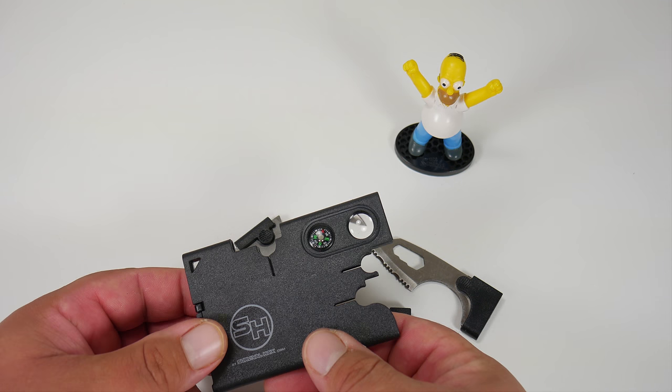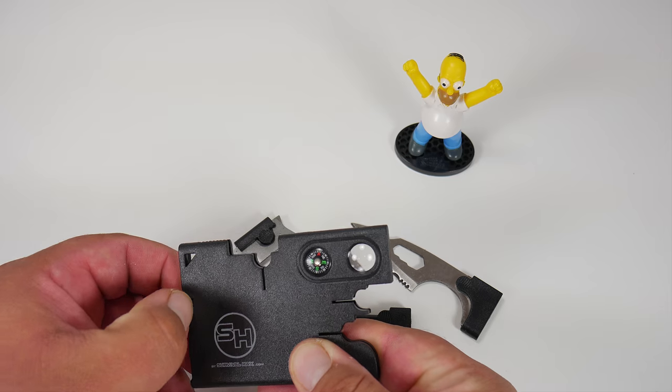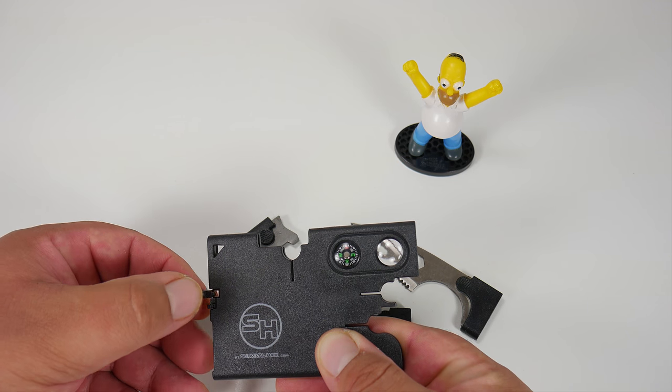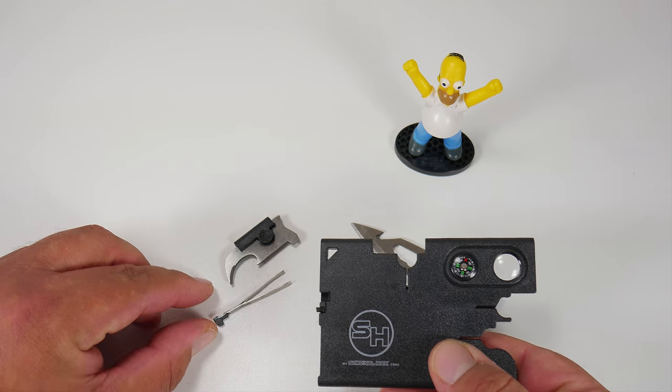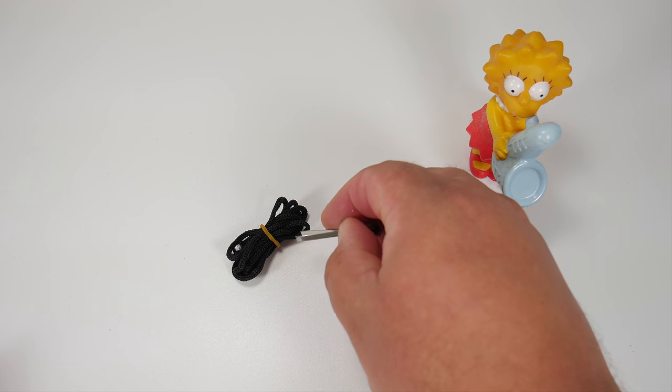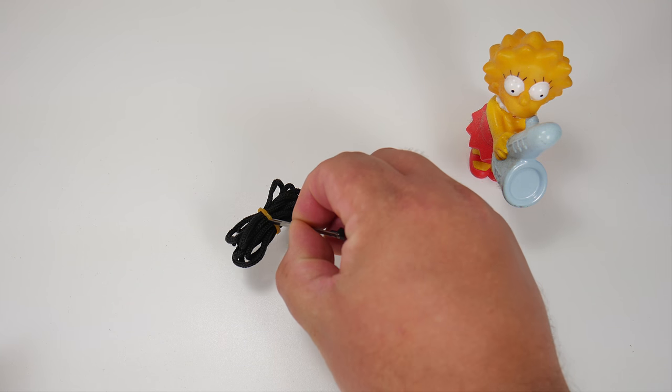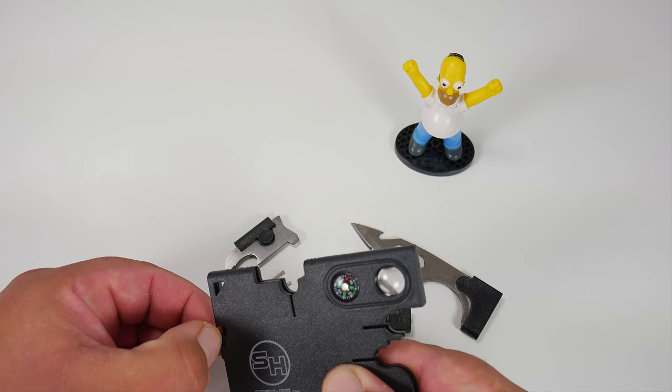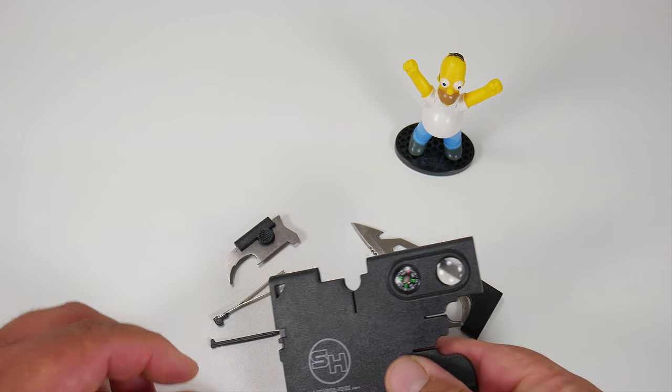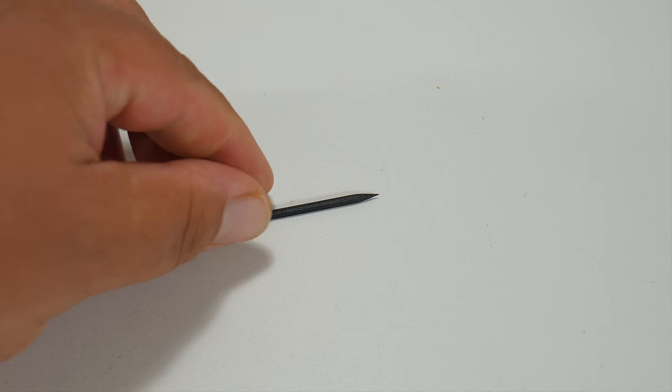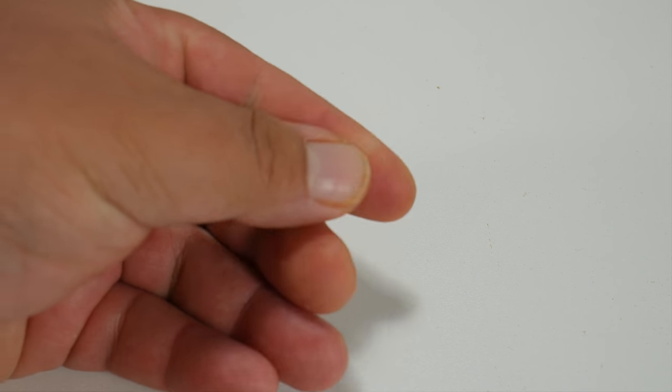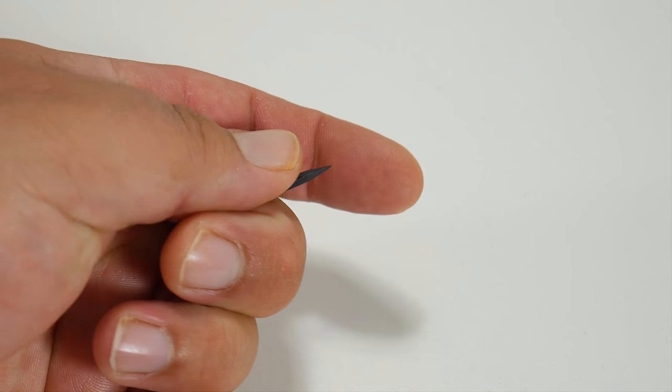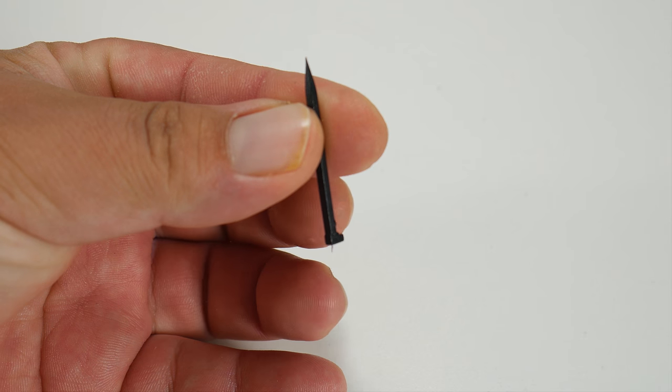Our fourth tool is the tweezers. We do like that they're made of metal. So now you know, you don't have to use your hands to pick up random things you find in the woods. Our fifth tool is a toothpick, and this one is made of plastic. I think plastic is the way to go. I don't know how metal and gums would have gone. That's a thumbs up for the engineering team.